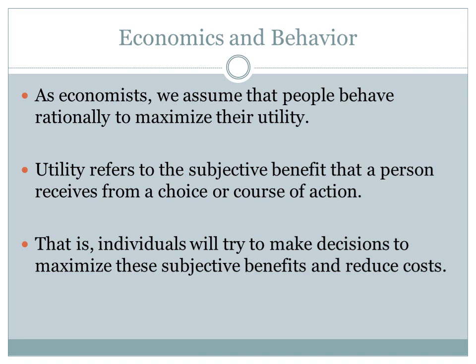Next, we will take a look at economics and behavior. As economists, we assume that people behave rationally to maximize their utility — in other words, they are economizers. Utility refers to the subjective benefit or satisfaction that a person receives from a choice or course of action. It's subjective because people value resources differently; one person's enjoyment of a good may be higher or lower than another's. Individuals try to maximize these subjective benefits while also reducing the cost of their decisions.